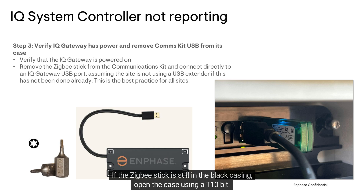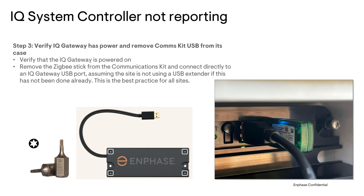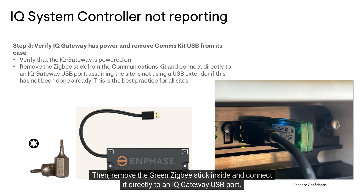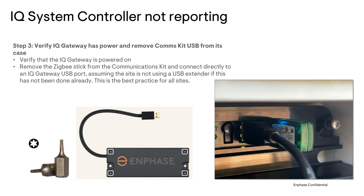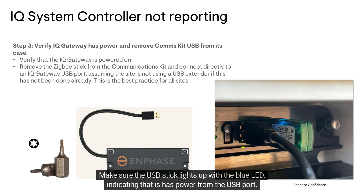If the Zigbee stick is still in the black casing, open the case using a T10 bit. Then remove the green Zigbee stick inside and connect it directly to an IQ gateway USB port. Make sure the USB stick lights up with the blue LED, indicating that it has power from the USB port.